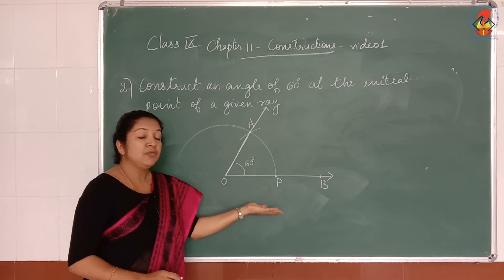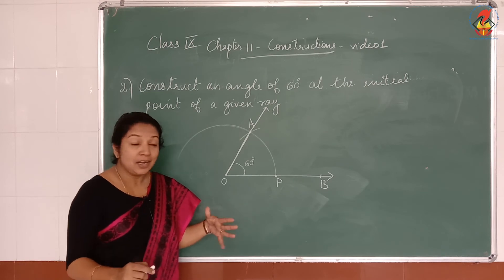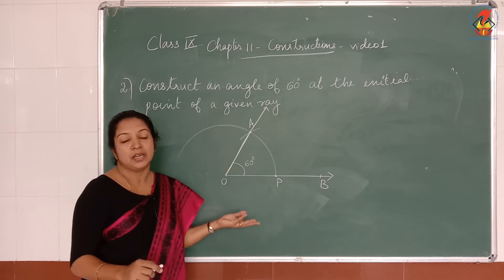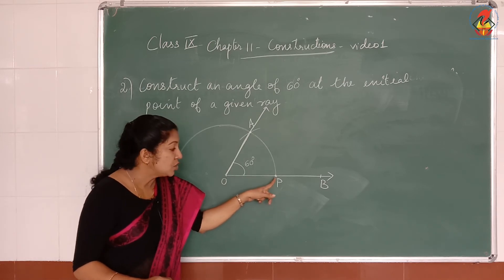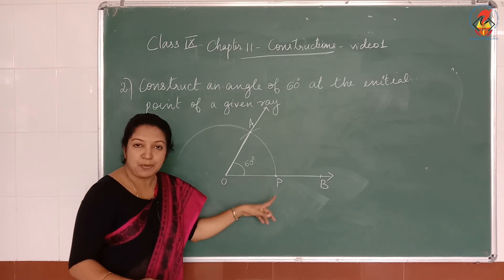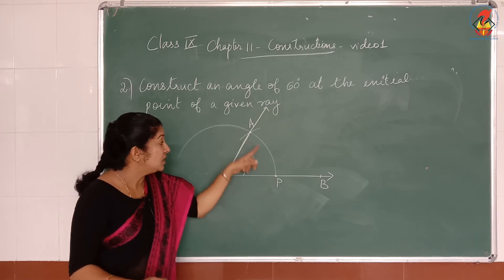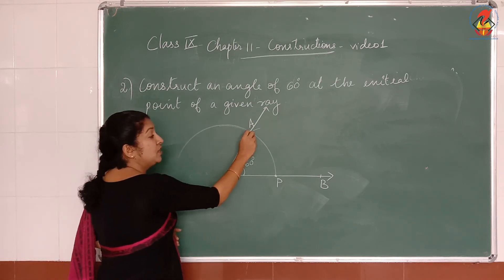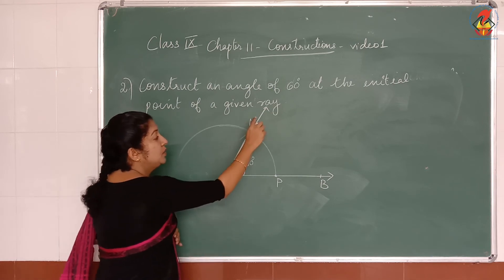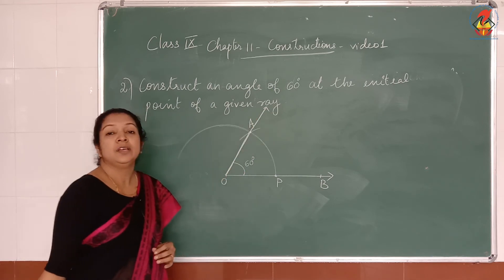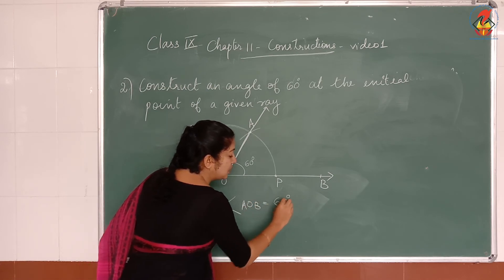What we have done: given ray OB, take O as the centre and any radius, draw an arc. Mark the point of intersection of this ray with the arc as P. Take P as the centre and with the same radius make a cut on this arc, and mark the point of intersection as A. Join AO. Angle AOB is the required angle, which is equal to 60 degrees.